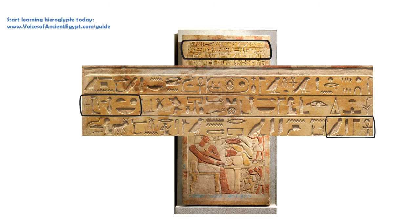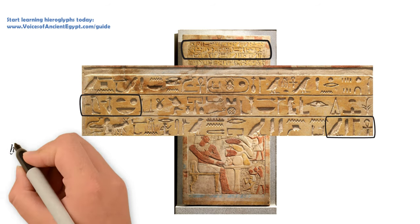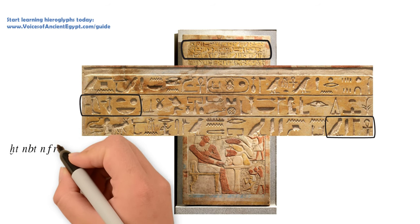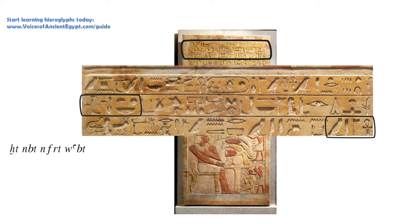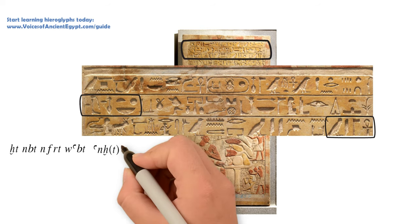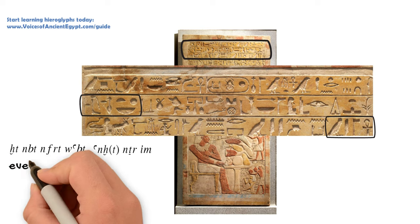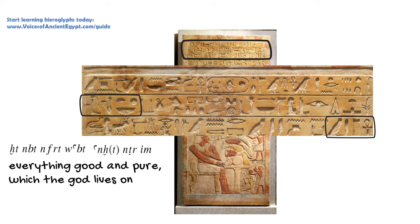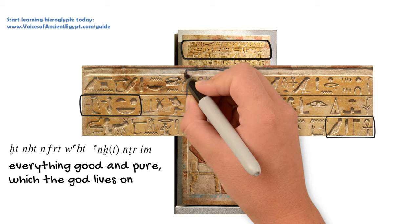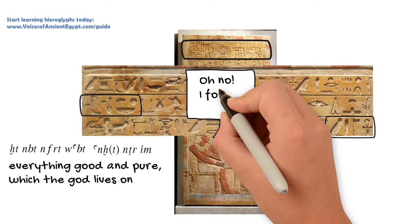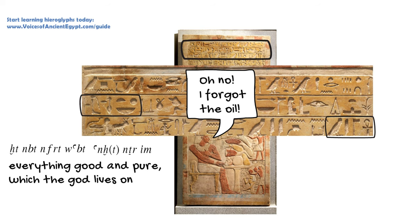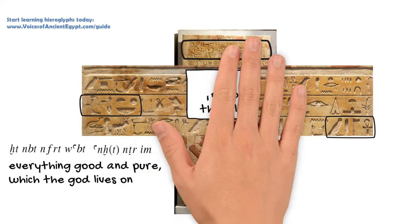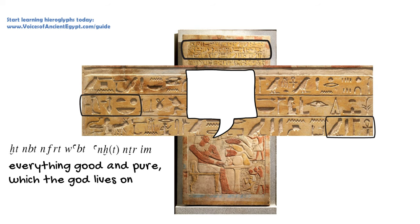Oftentimes where you'll see this is at the end, where it will say in Egyptian a phrase meaning 'everything good and pure which the god lives on.' This is basically a catch-all phrase for offerings, so you can include everything good you'd want in your afterlife without having to remember and have the space for naming every single possible offering in the list. This gives you an all-inclusive ending to that offering list.